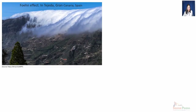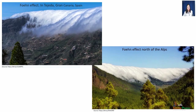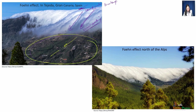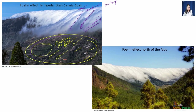Fohn winds look very beautiful while they descend the Alps in Europe. The Fohn effect can be seen in Tejeda, Gran Canaria, Spain. While descending, temperature increases — so along the lower slopes the region will be frost-free and ice-free. You will find extensive settlements and orchards developing in these regions due to the favorable climatic conditions created by this local wind. In this picture you can see descending Fohn along the northern slopes of the Alps.